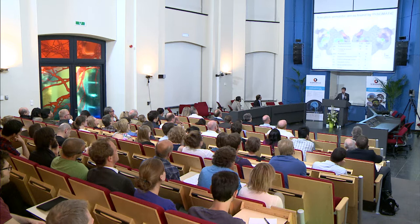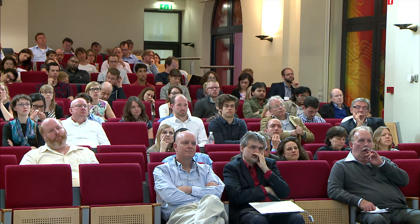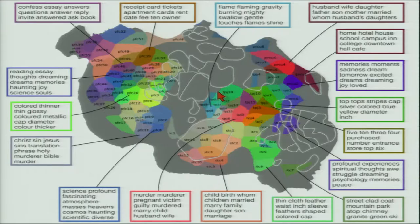The next question is: what do these areas do? For each semantically selective area, we identify the 10 words that the pragmatic model predicts would elicit the largest brain activity. For example, one precuneus area is predicted to respond highest to husband, wife, daughter, father, son, mother, married — that seems like family relationships. A nearby precuneus area responds to home, hotel, house, school, campus, college — place-related. Another precuneus area responds to memories, moments, sadness, dreaming, tomorrow, excited, dreams — more abstract.